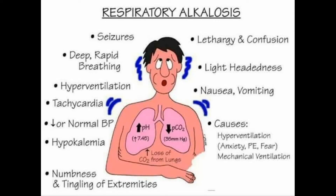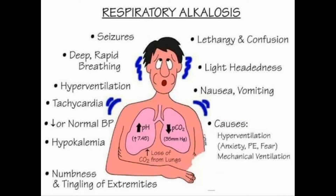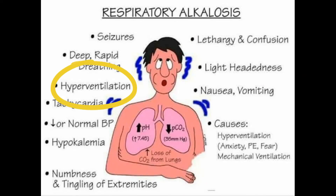For respiratory alkalosis, the lungs are losing too much carbon dioxide — mainly due to hyperventilation, as opposed to respiratory acidosis which was due to hypoventilation. Causes of hyperventilation include anxiety, pulmonary embolism, fear, and mechanical ventilation. For clinical features, Triple H again: hypokalemia and haziness as in metabolic alkalosis, but here hyperventilation is also a clinical feature since the patient is still hyperventilating.